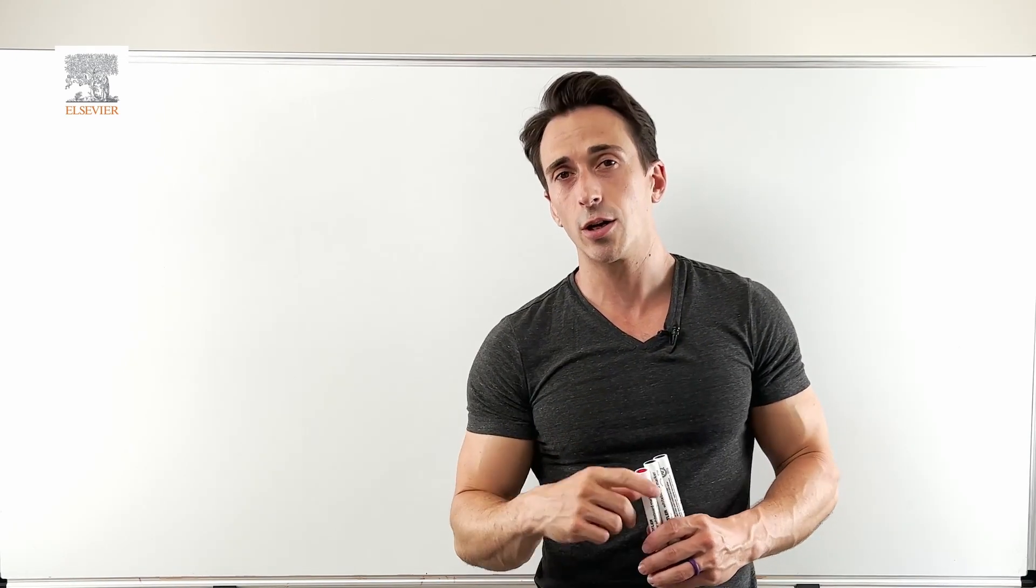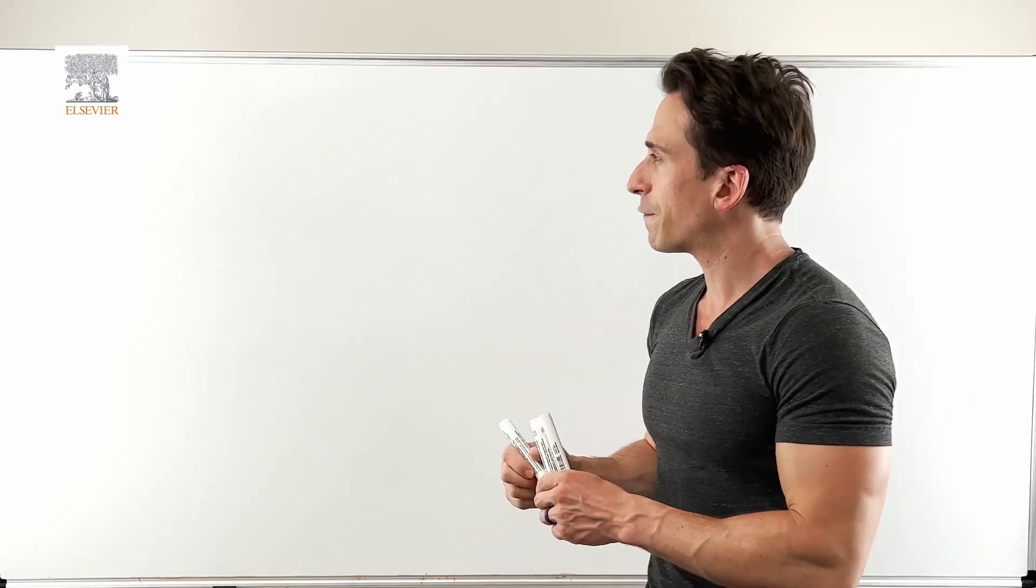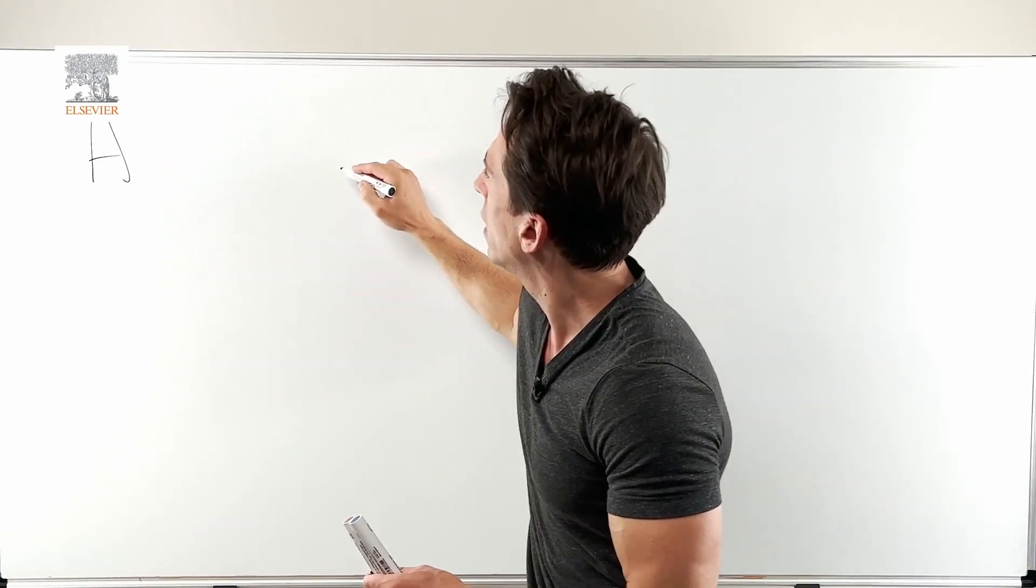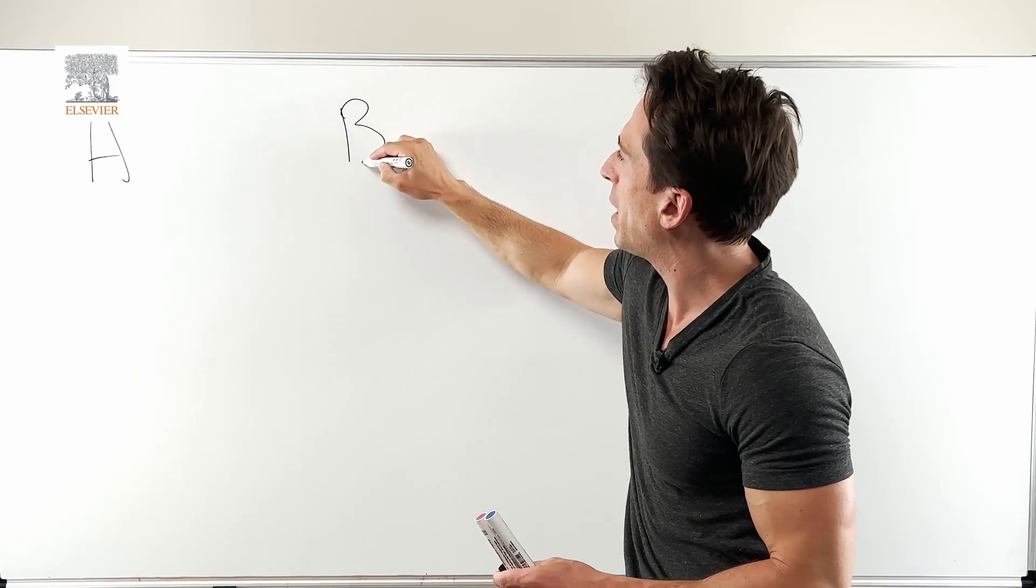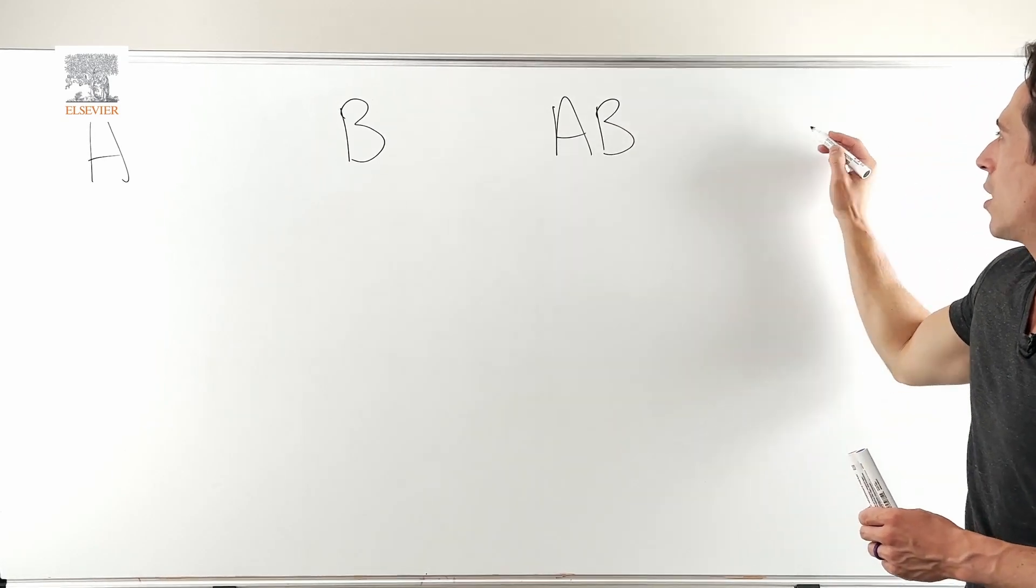If you are of a particular blood type, who can you give blood to and who can you receive blood from? So firstly, you need to understand that you can be blood type A, you can be blood type B, you can be blood type AB, and you can be blood type O.